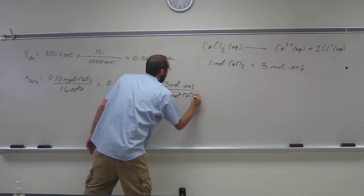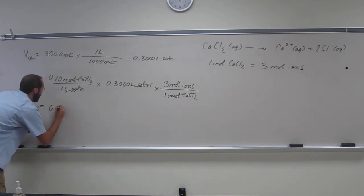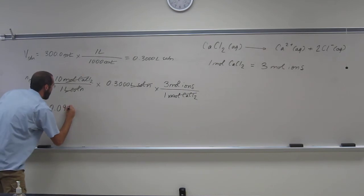So cancel, cancel, cancel, number of moles of ions. Should that give us that? We plug into our calculator: 0.1 times 0.3 times 3. So 0.090 moles of ions.